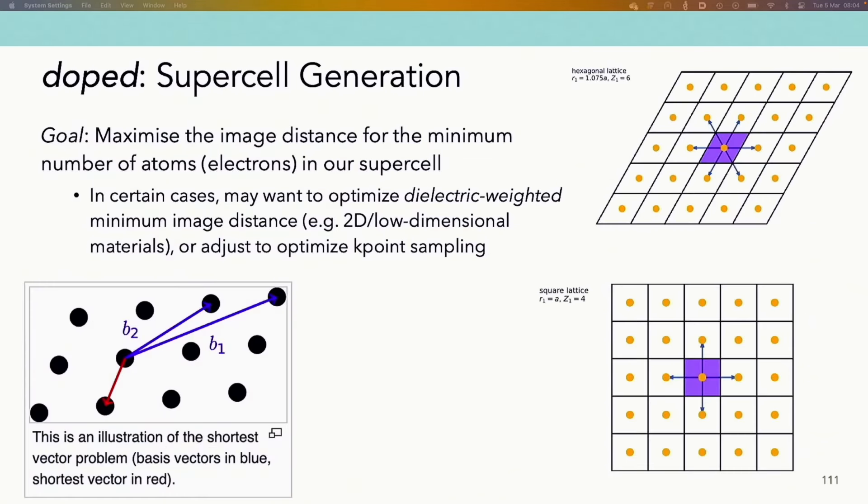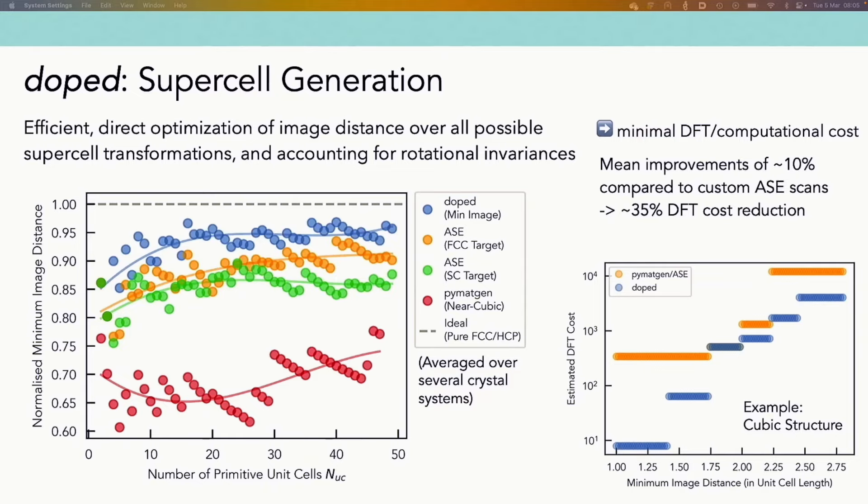So I mentioned that DOPED can automatically generate this optimal supercell for a given input crystal structure. In general, when thinking about the supercell we want to use for a defect investigation, our typical goal is that we want to maximize the image distance of periodic images of our charged defect in these supercells for the minimum number of atoms or electrons in a supercell, or essentially for the minimum computational cost. Mathematically this is known as the shortest vector problem and there's actually no general analytical solution and typically has to be solved either numerically or to some approximate means. So in DOPED I've implemented this kind of efficient and direct optimization of this minimum image distance by scanning over all possible supercell transformations in this kind of efficient scanning way and accounting for symmetry invariances.